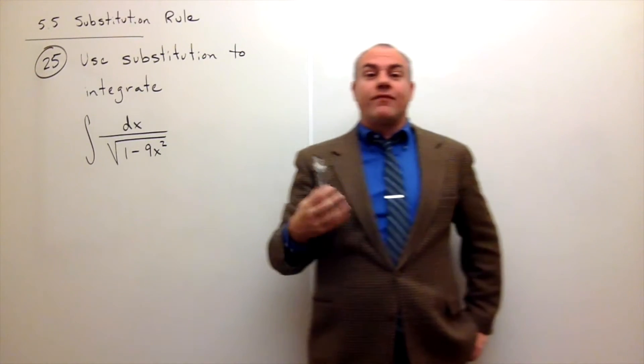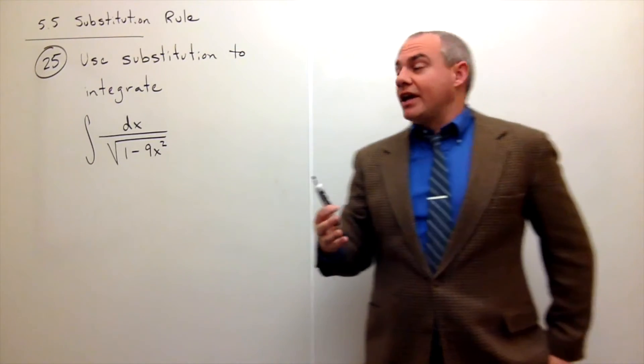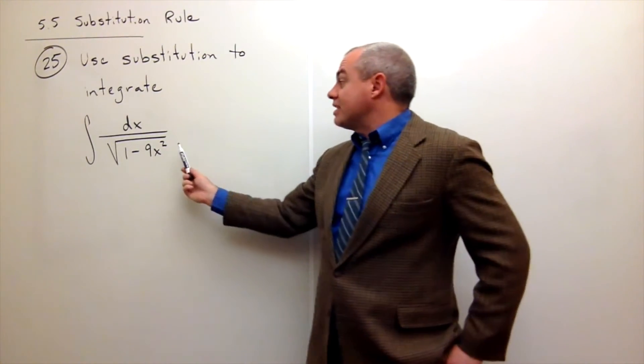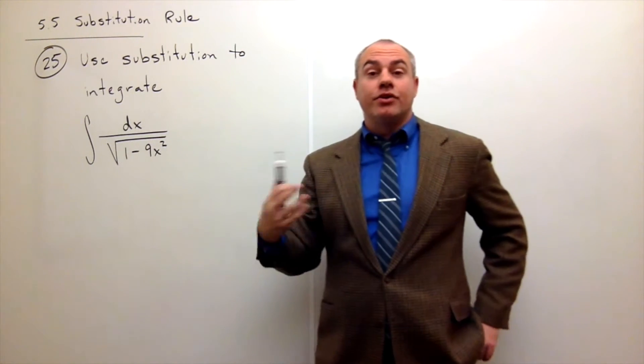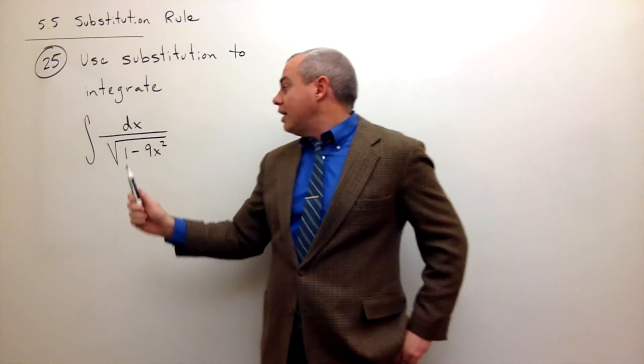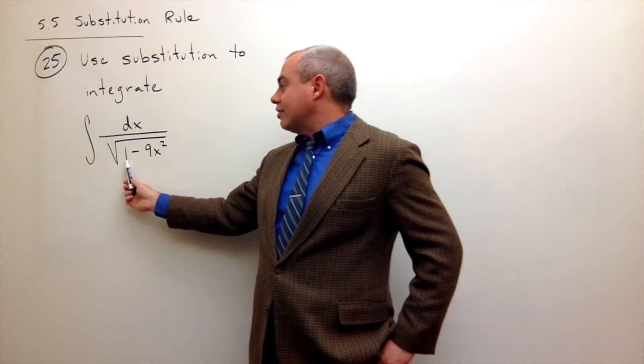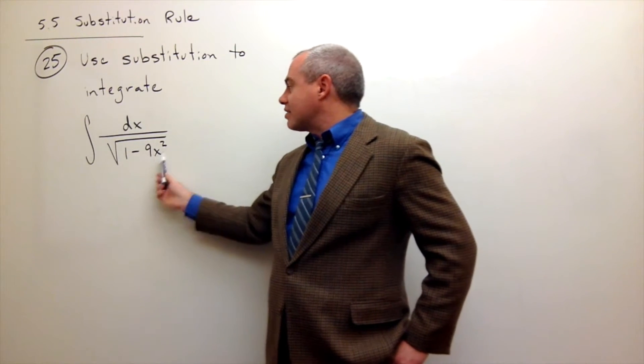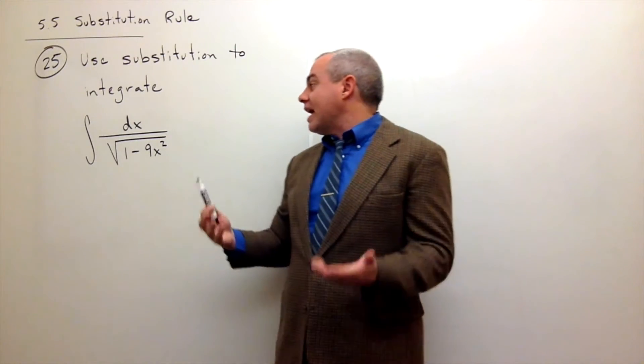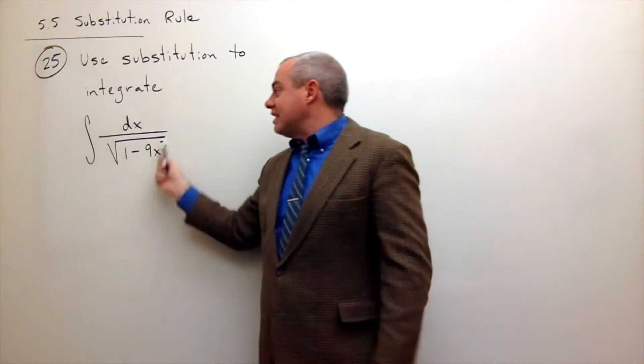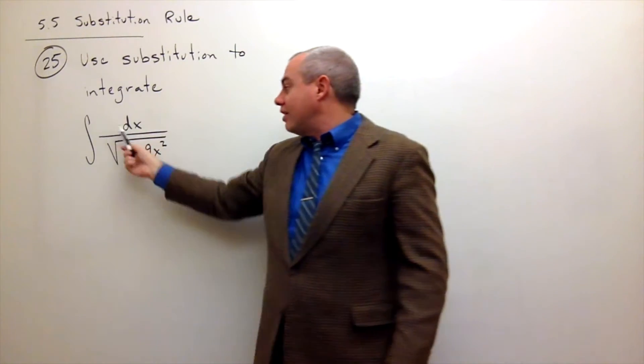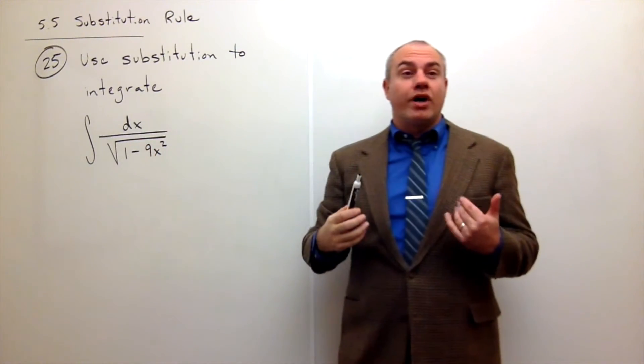Unfortunately, that's a very bad choice. The reason why is because the second thing we're looking for is something where if I take its derivative, the derivative also shows up. In this case, if I take the derivative of 1 minus 9x squared, I get negative 18x. There's no negative 18x sitting up here anywhere, so we're in trouble.